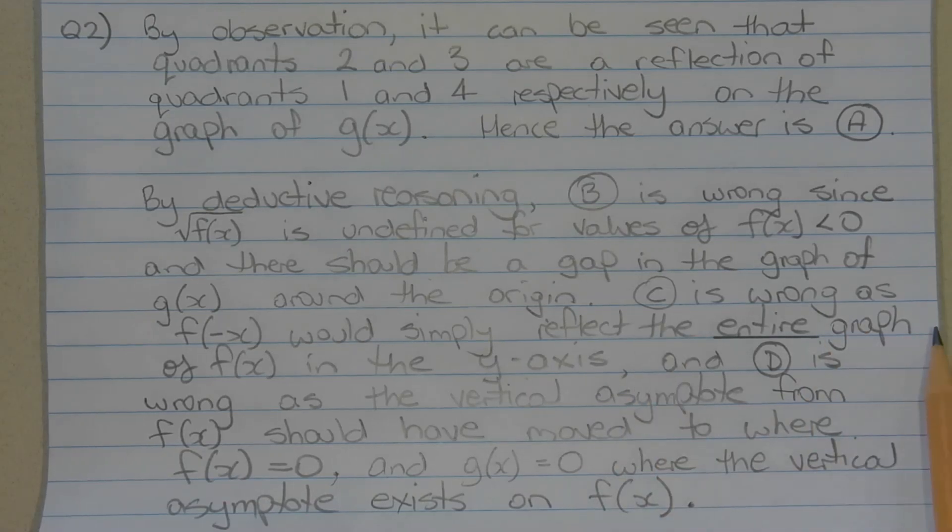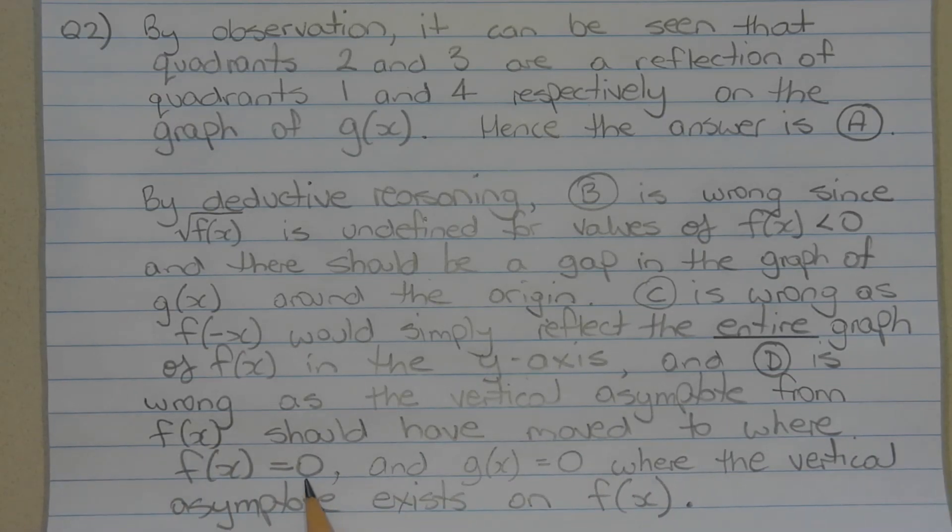Option C is wrong as f(-x) would simply reflect the entire graph of f(x) in the y-axis. And option D is wrong as the vertical asymptote from f(x) should have moved to where f(x) equals 0 and g(x) equals 0 where the vertical asymptote exists on f(x).